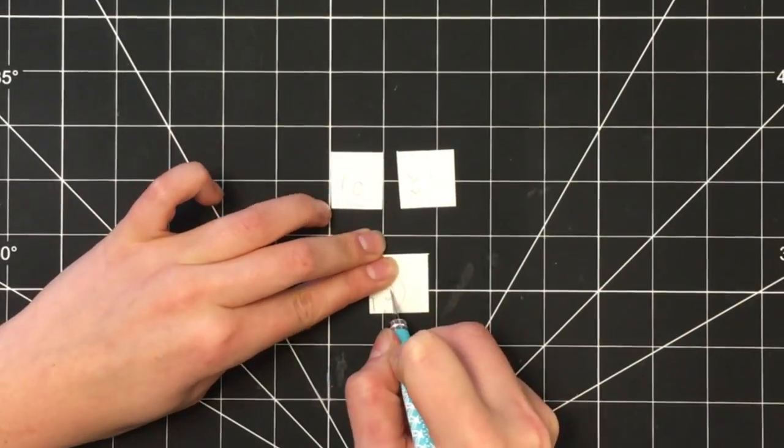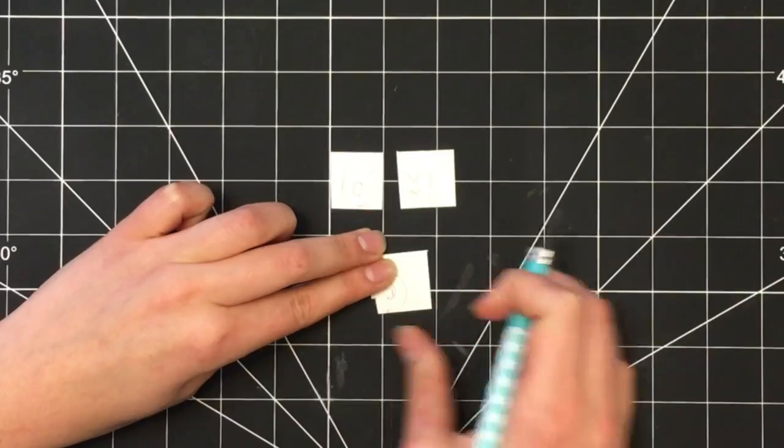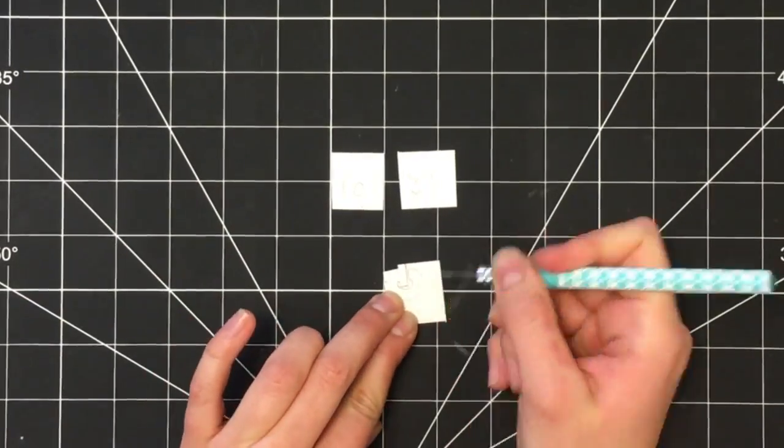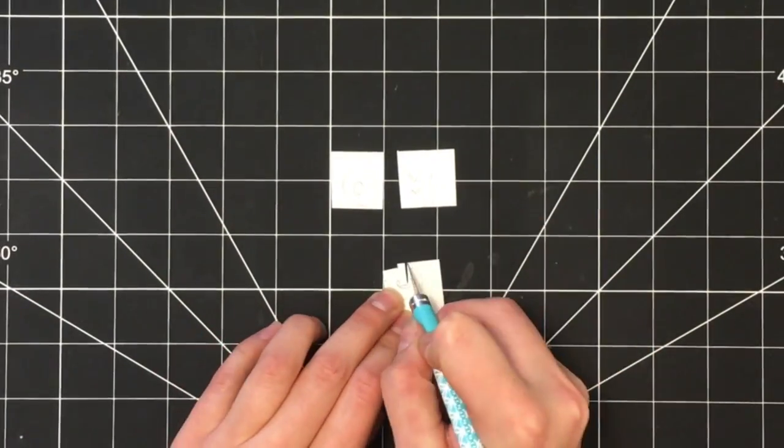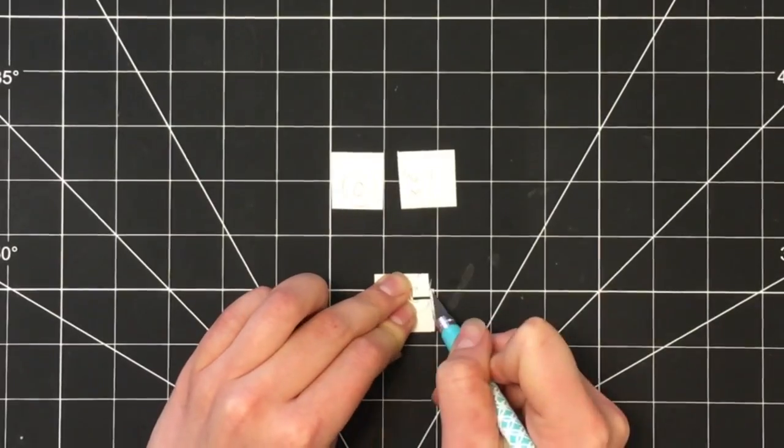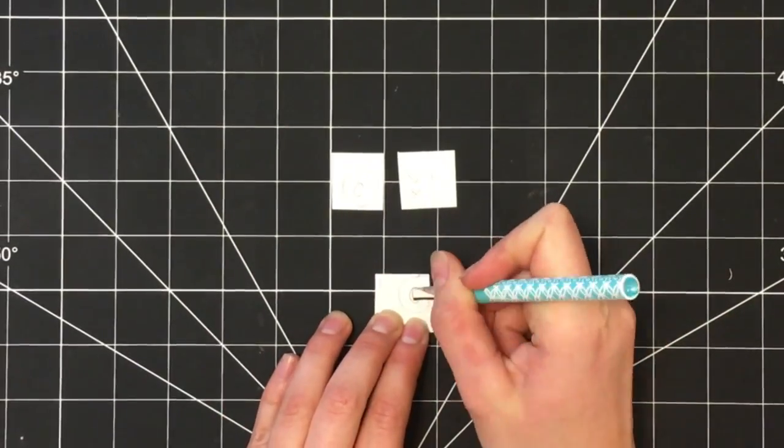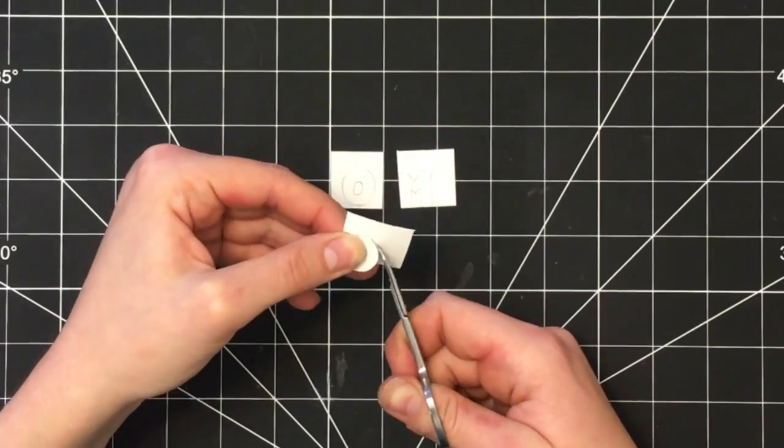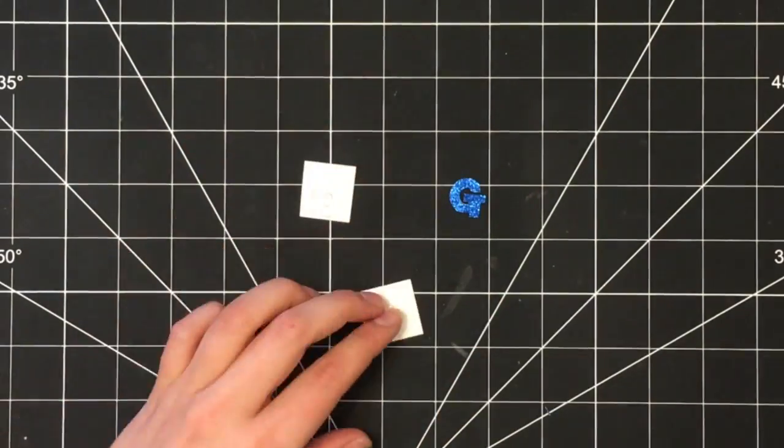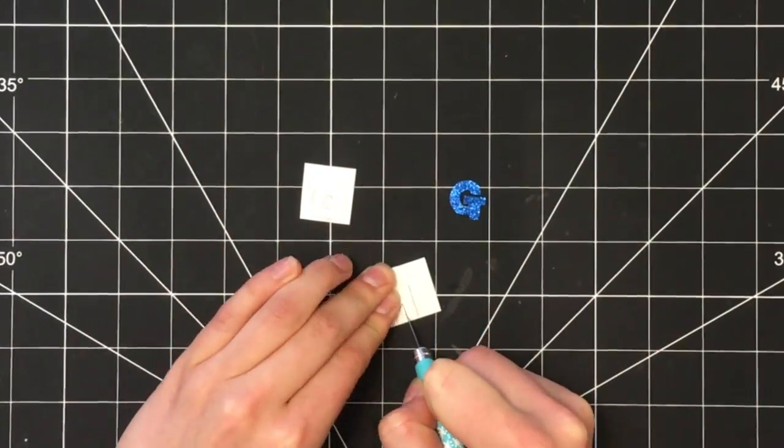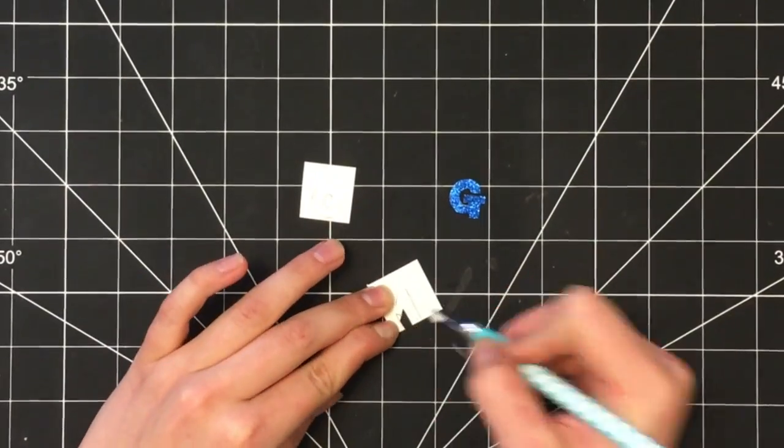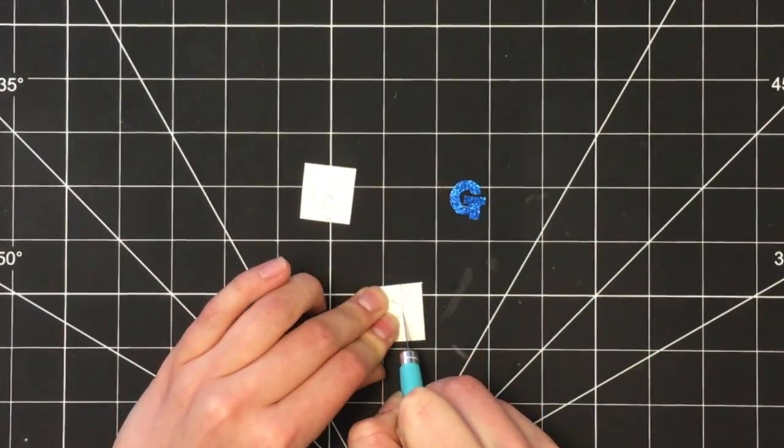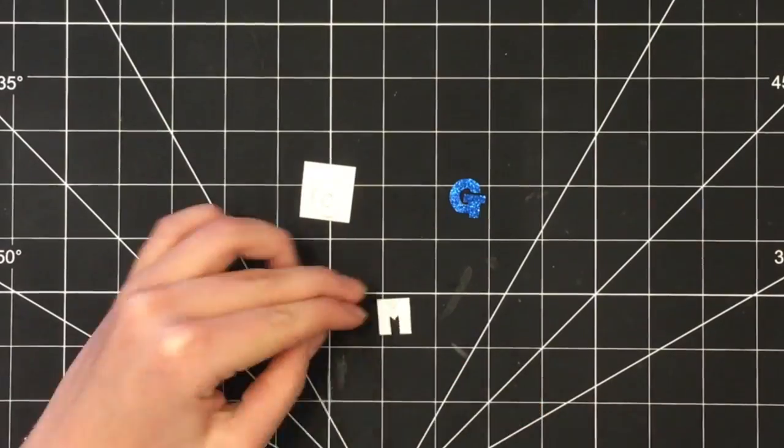Once you have everything traced onto your glitter paper, take your scissors or here I'm using a scalpel paper tool to cut all of the letters out. I ended up using a combination of scissors and that paper cutter tool. I found that the scissors worked best for the G which was a bit curved, and then that paper tool worked better for the straight edges of the letter M, but basically you can use whatever you have laying around.